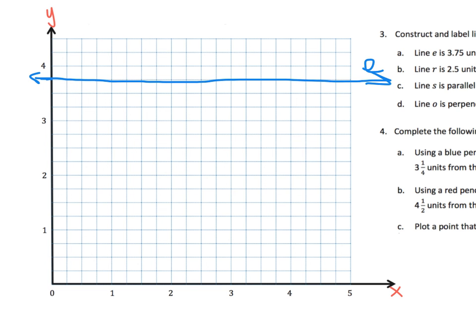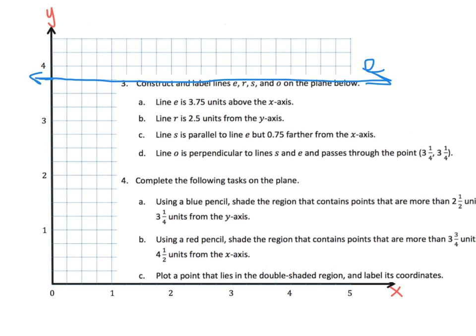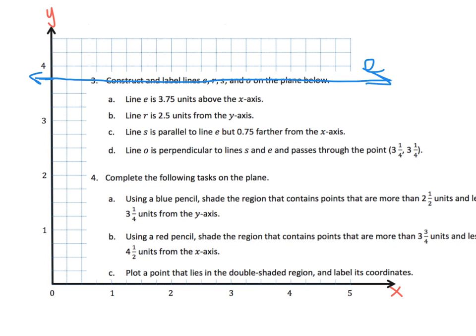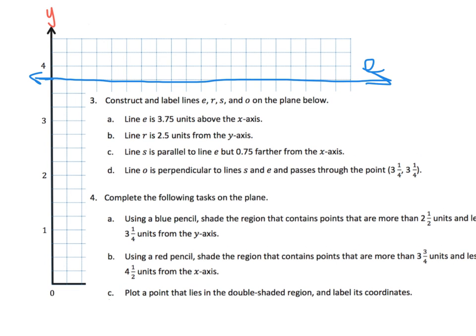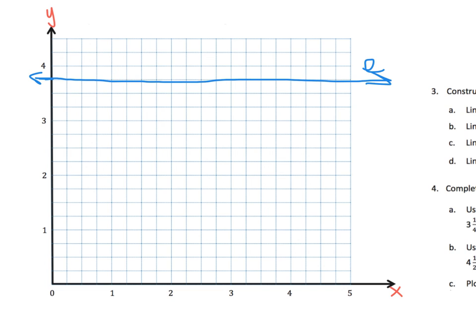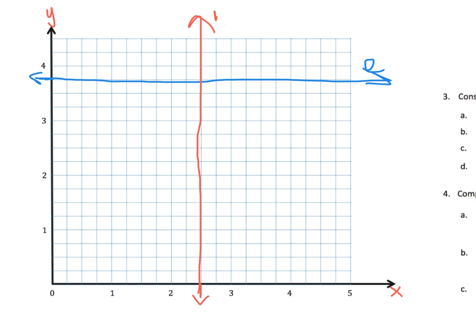And that's the idea. So as we are working, the next one says R is 2.5 units from the y-axis. R is 2.5 units from the y-axis. So what does that mean? That means 2.5 from the y. Well, here's our 2.5 from the y. And so our line is going to go like this, straight up and down. And that's letter R.